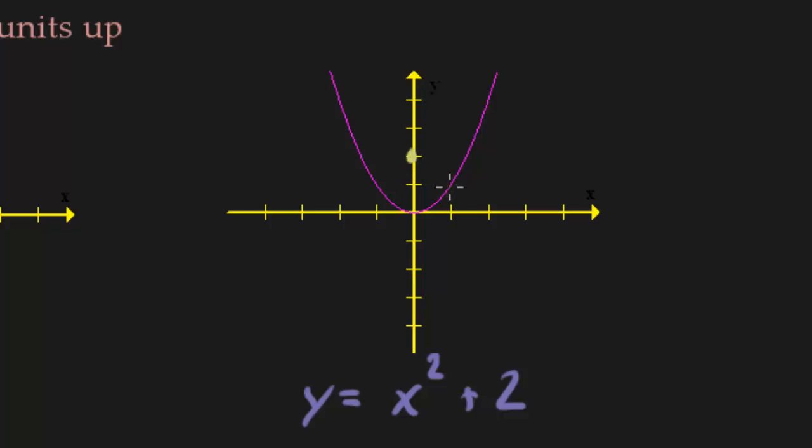So everything else just goes up 2 units. So here's the point 1,1, which is now up at 1,3. The point 2,4 is now going to be up at 2,6. That's off the graph, but it would be somewhere right there. Negative 1,1 will now go up to negative 1, it will go up 2 units.